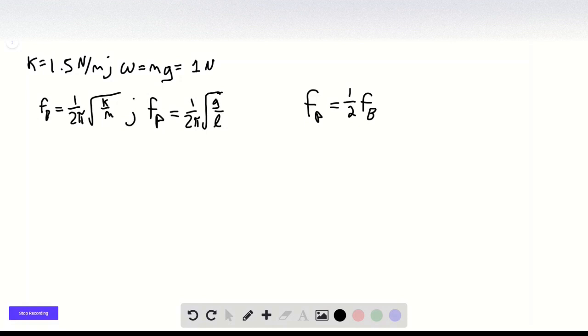So let's rewrite this here. We have 1 over 2π square root of G over L equals 1 over 4π square root of K over M.